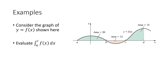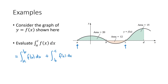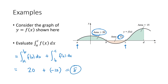Suppose we have a function where we don't know its formula or exact x values, but we are given some areas. To evaluate the integral from a to c, I break it up into the integral from a to b plus the integral from b to c. The area from a to b is 20, and the area from b to c is 12 — but because that region is below the x-axis, it counts as negative. So the total is 20 plus negative 12, which equals 8. Any area below the x-axis contributes negatively to the net area.